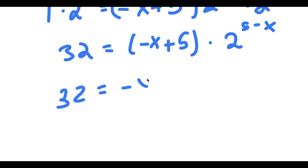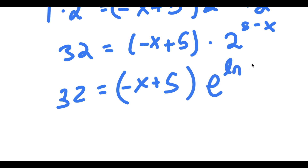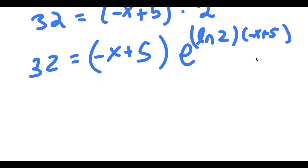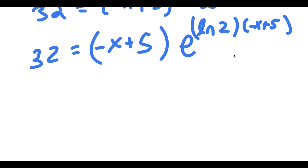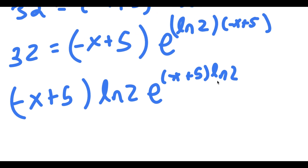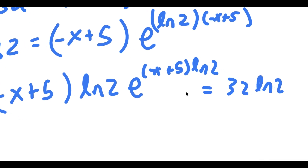So I have 32 is equal to negative x plus 5 times e to the power of ln of 2 times negative x plus 5. This is the same thing as negative x plus 5 times ln of 2, raised to the power of negative x plus 5. Then x plus 5 times ln of 2 is equal to 32 times ln of 2, multiplying both sides by ln of 2.